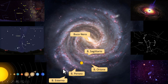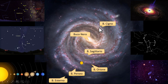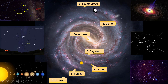Then we have the outer arm, which we can't see well from Earth because in the middle is the arm of Perseus, and then the swan arm, which would be the opposite arm of the galaxy with respect to the Sagittarius arm. Then there is a second outer arm, which is the arm of the cross shield.